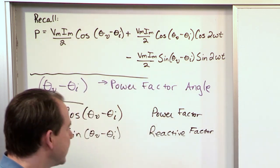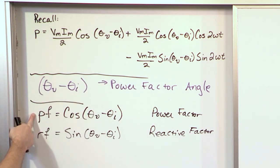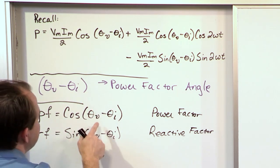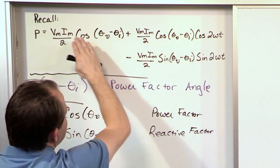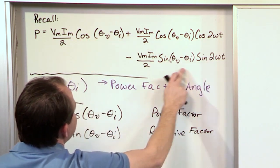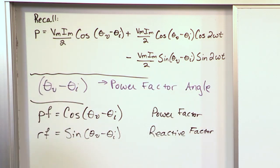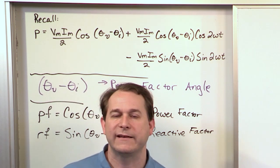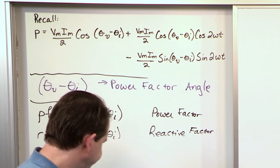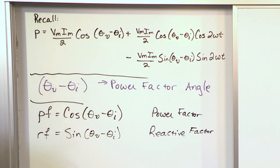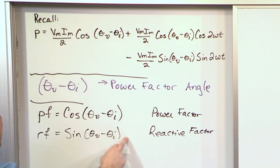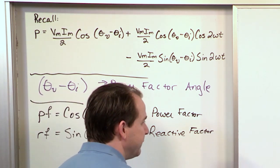The problem is, in a lot of problems you're given the power factor but you're going to end up needing the reactive factor — the sine of this angle. So you'll need to figure out what the angle is on the road to figuring out the reactive factor. And the bottom line is there's an ambiguity in going from the power factor to the reactive factor. Let me explain exactly what that ambiguity really is.